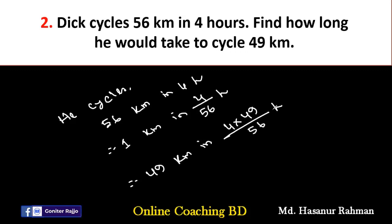Now we have to divide. We can divide 49 and 56 both by 7, giving 7 and 8. Then divide 8 and 4 both by 4, giving 1 and 2. So we get 7 by 2 hours.